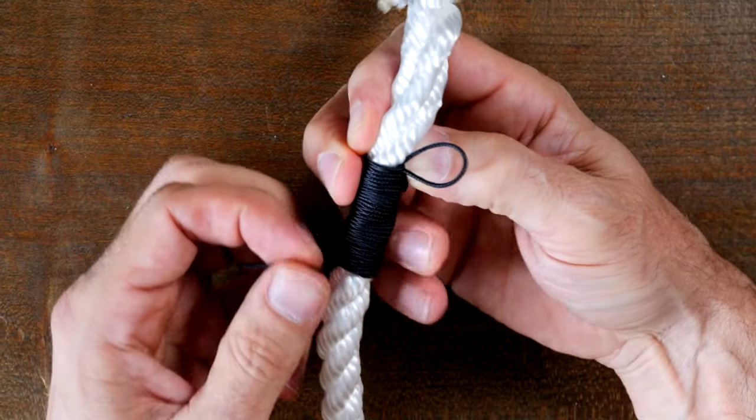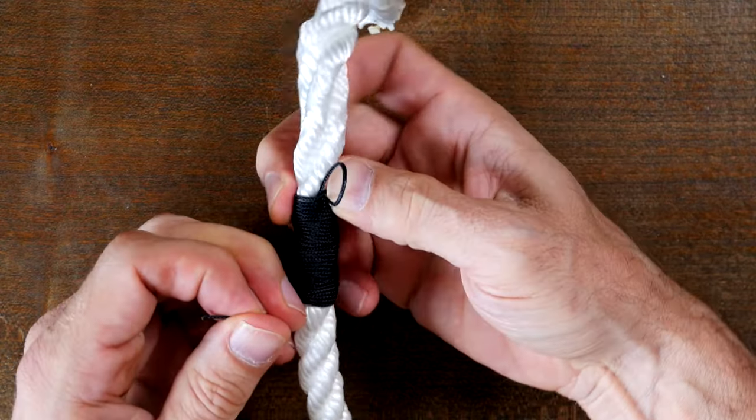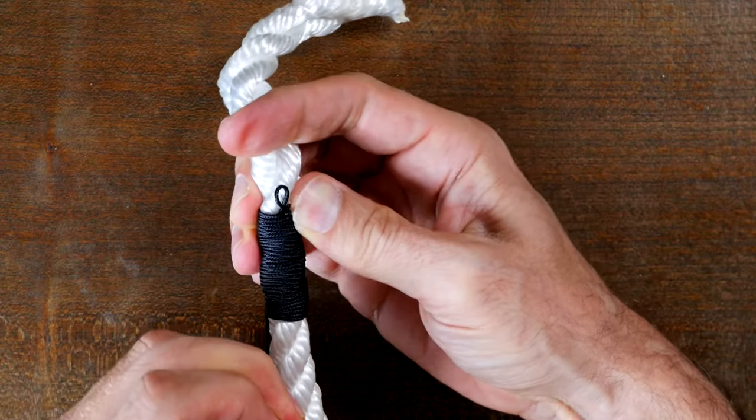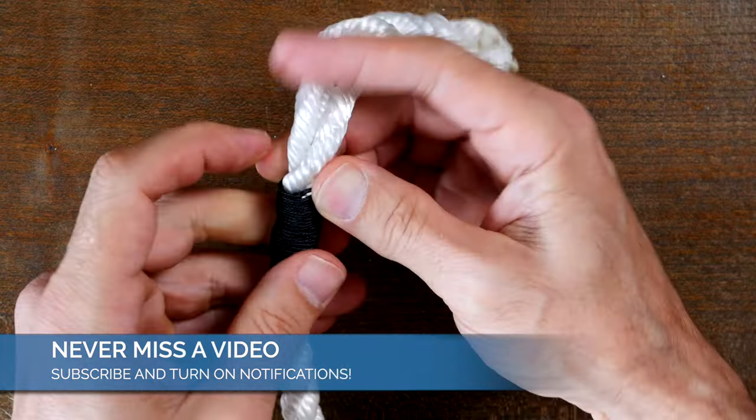Then pull the other tail end, that is the line running under your wraps. Pull it tight to cinch up and hold the opposite end.